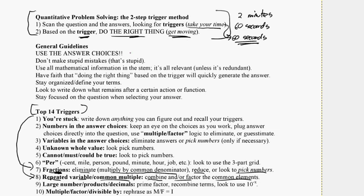Some general guidelines: always use the answer choices — that's a huge deal on this test. The GMAT is fully aware it's a multiple choice test and will want you to constantly use the answer choices, going way beyond just plugging them in. Also: don't make stupid mistakes. A lot of students say they always make stupid mistakes, but this is the big leagues — you can't make stupid mistakes. Use all the mathematical information in the stem, as it's all relevant unless redundant, which is rare.